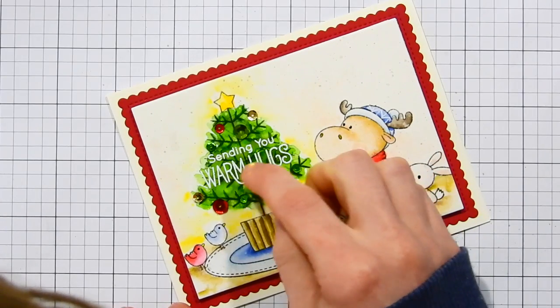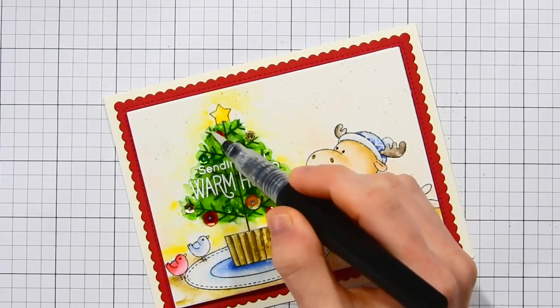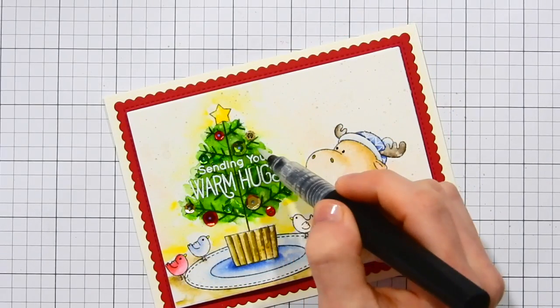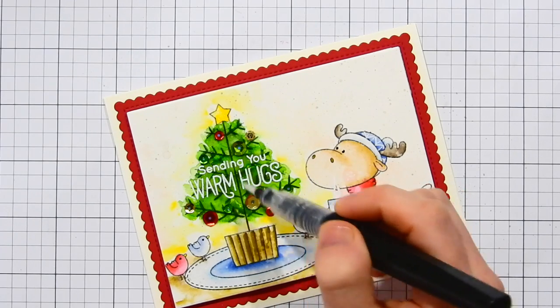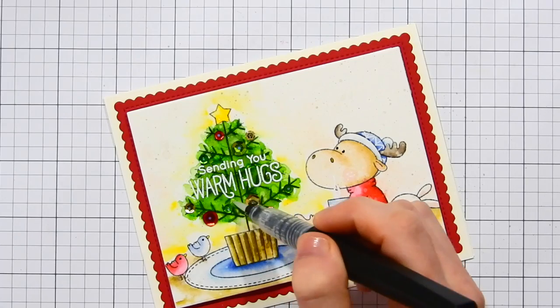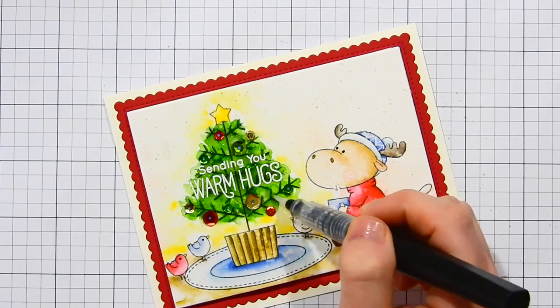I also am applying some sparkle here with the Spectrum Noir sparkle pen. This is the clear color and I'm just dabbing this onto the tree because I don't want to move the color that we've done. I just want to add a little bit of sparkle so I'm just dabbing this so I'm carefully applying the sparkle onto the tree.